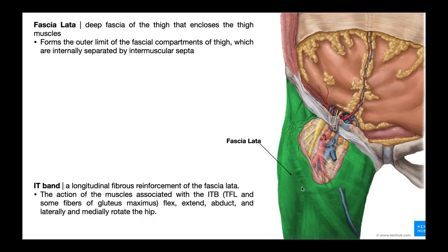What we're looking at here is the right lower extremity, or the right leg. Here's the pelvis, here's the abdomen up here, and all this green tissue right here is the fascia lata. By definition, the fascia lata is the deep fascia of the thigh that encloses the thigh muscles. In previous videos when we talked about the intermuscular septa of the thigh — those extensions of the deep fascia that divide the thigh into anterior, medial, and posterior compartments — those intermuscular septa are literally extensions of the fascia lata, and this fascia lata covers the entire thigh.